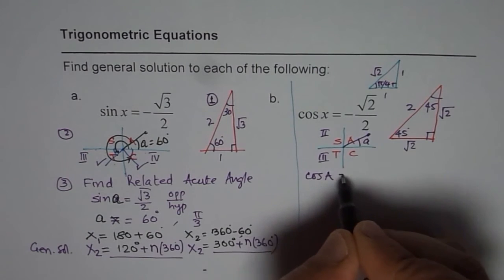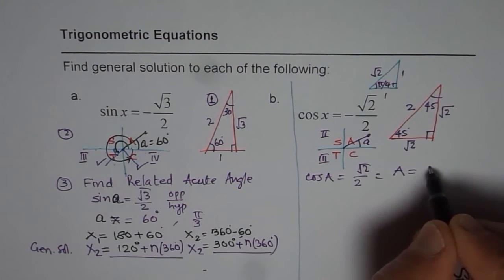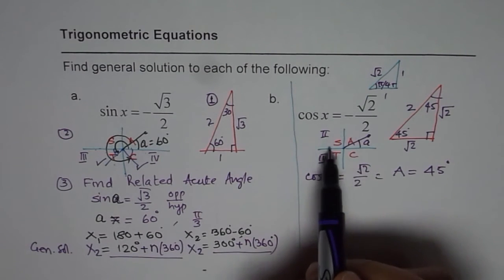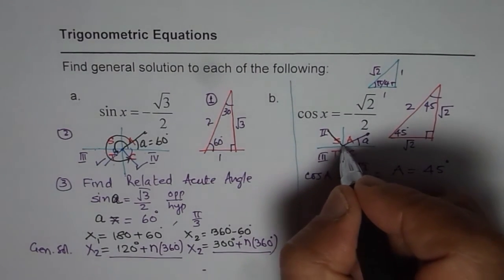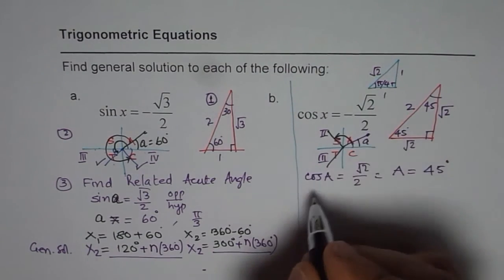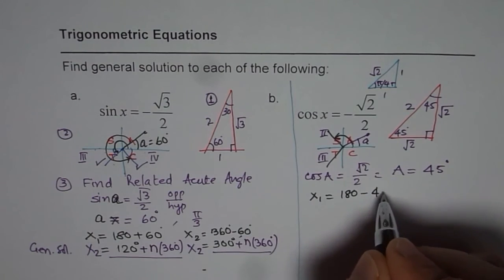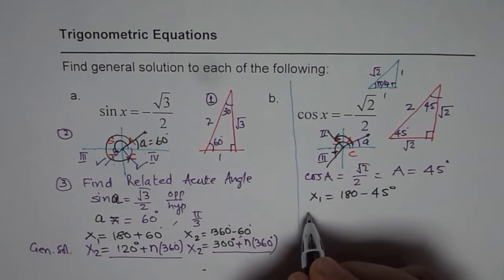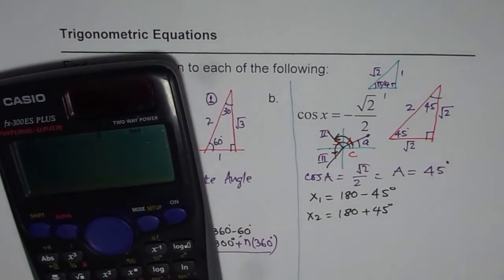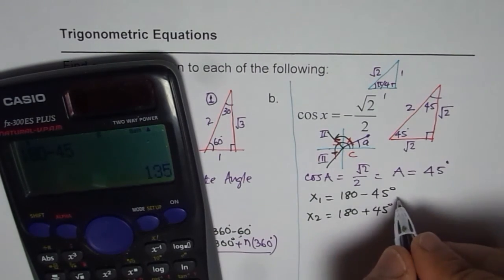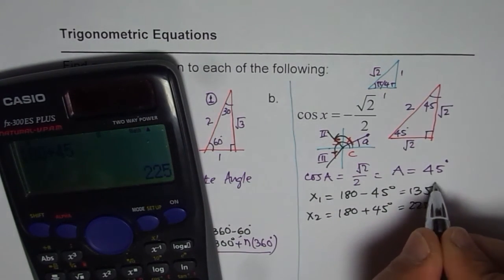So we say cos of A is equals to square root 2 over 2. Using this triangle, we know A is equals to 45 degrees. But we need in these two corners. That means we are looking for a solution which is like this. We know x1. The solution is 180 minus A, so it is 180 minus 45 degrees. And the other solution is 180 plus A. So x2 is 180 plus 45 degrees. You can use your calculator and calculate 180 minus 45 degrees is 135, and 180 plus 45 is equal to 225.